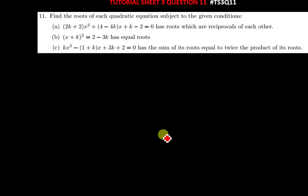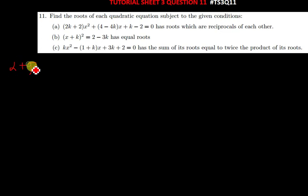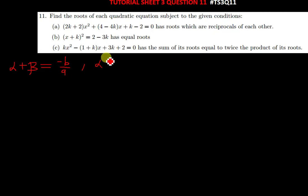We'll quickly move on to the first question. The question is telling us to find the roots of each quadratic equation subject to the given conditions. We use the sum and the product of roots — when adding two roots alpha and beta, the result is equivalent to negative B over A, and when multiplying two roots alpha times beta, you get C over A.